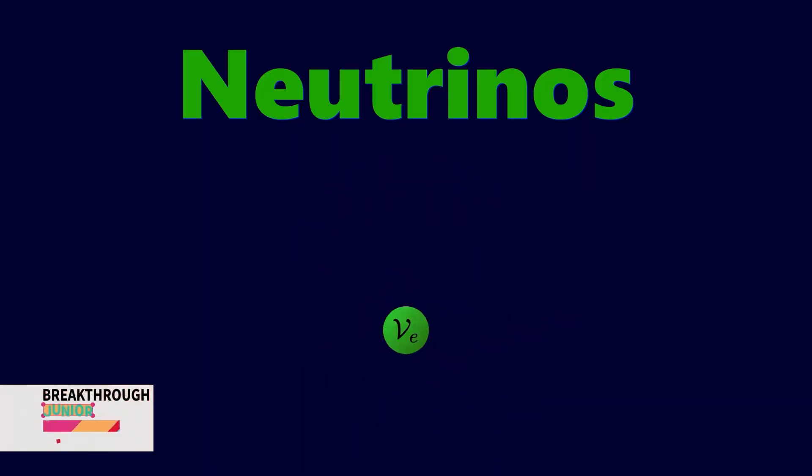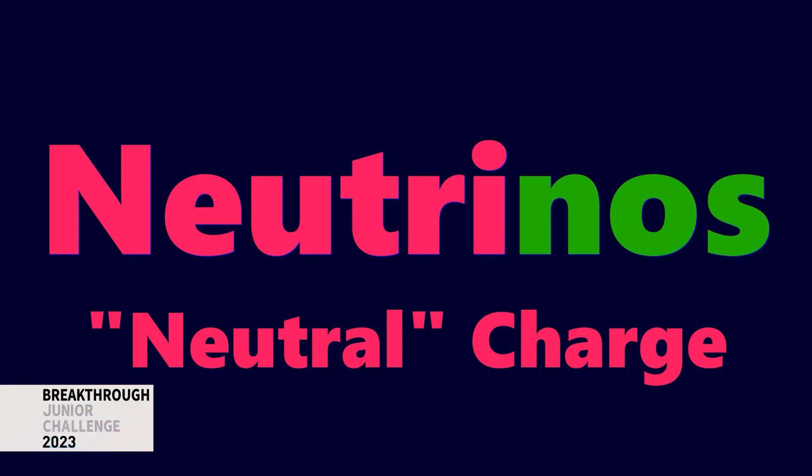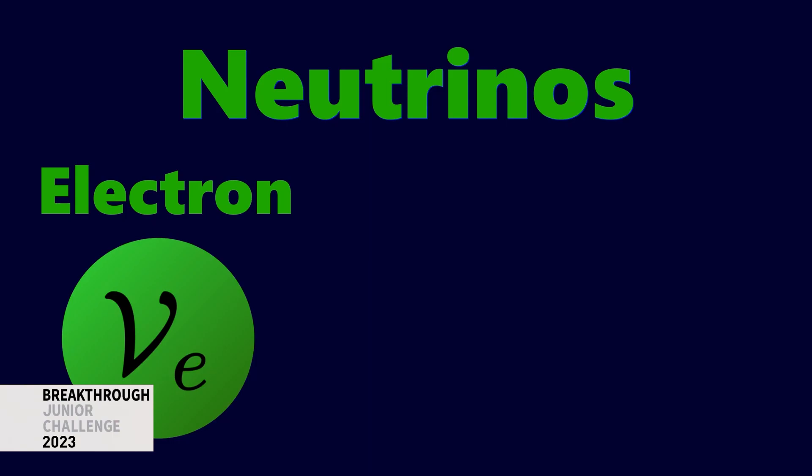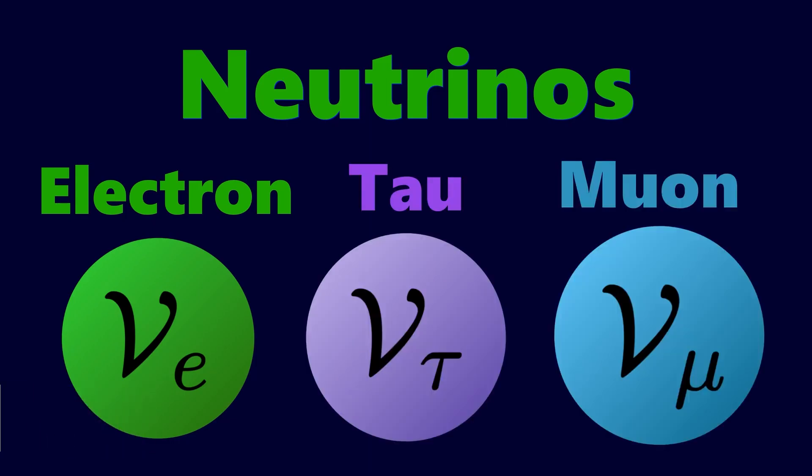Neutrinos are very small particles with no electric charge. There are three kinds, or flavors, of neutrinos, namely the electron neutrino, the tau neutrino, and the muon neutrino.